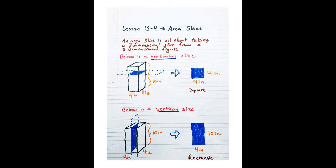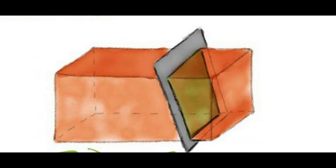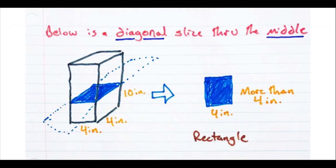Let's move on to diagonal slices. In a 2D shape, a diagonal line cuts across the shape at some sort of angle. So if we take a diagonal slice of a 3D shape, we're going to cut across the 3D shape at an angle. Here's an example of a diagonal slice — you can see it cuts across this prism at an angle. There are a few ways you can diagonally slice an object: through the middle, just at the edge, and through the corner. We will explore all three.